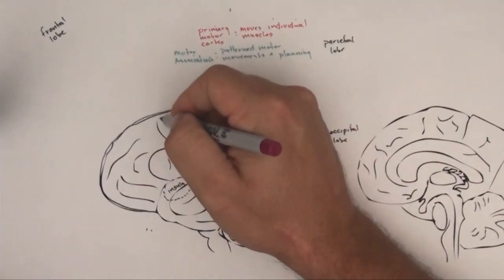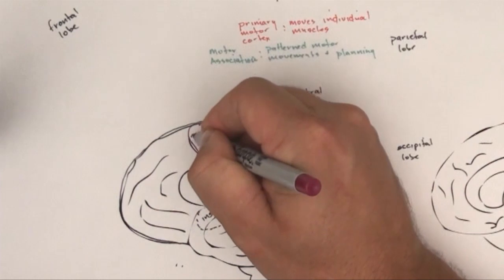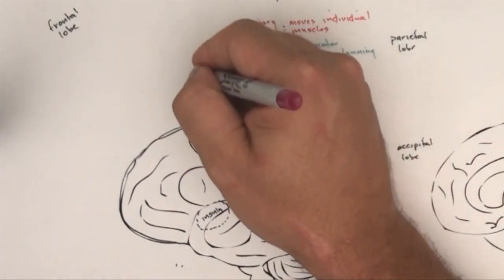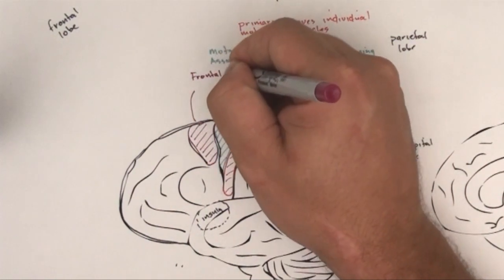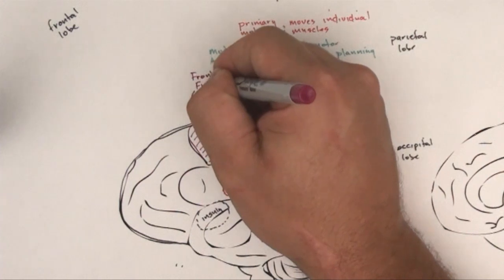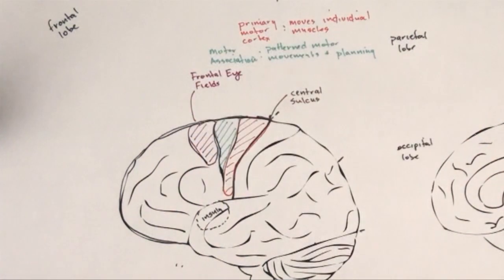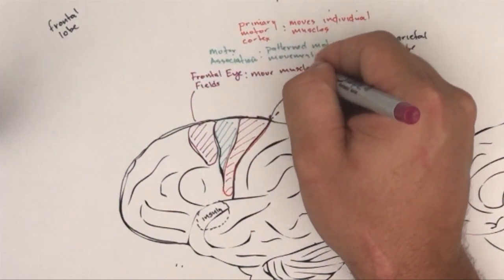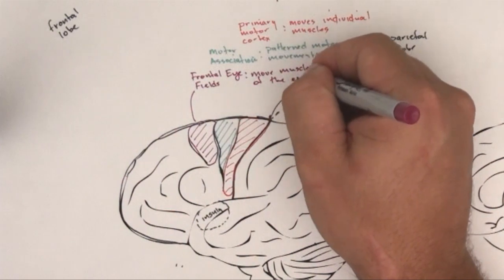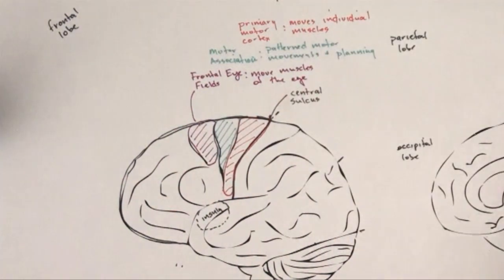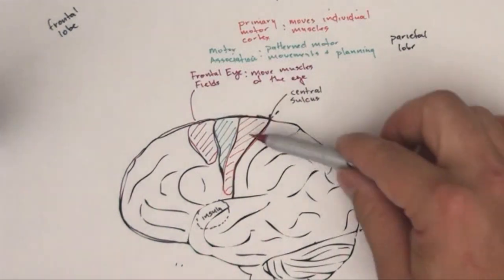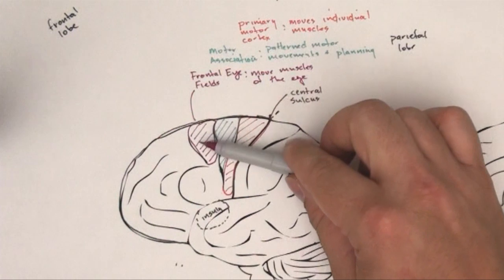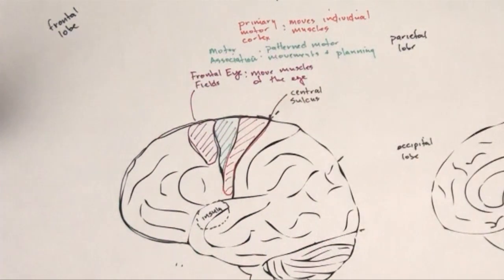You can move just forward of this, and this is called the frontal eye fields. And this is going to move the muscles of the eye. One thing that I think is pretty neat about the brain is you generally organize things that have to work together. And this area of the brain is going to move the hand, and this area of the brain is going to move the eyes. And so having them right near each other is going to improve eye-hand coordination.